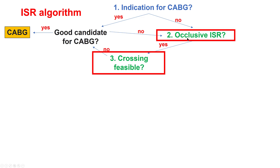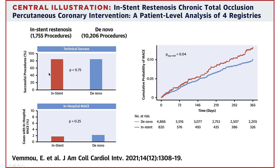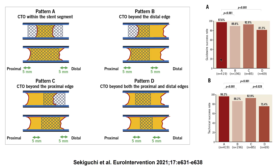The second consideration is whether the patient has occlusive — meaning total occlusion — in-stent restenosis, and if so, whether crossing of the CTO is feasible. We know that patients with de novo and in-stent CTOs have similar success rates in the current era. However, during follow-up, patients who have in-stent CTO have higher risk of MACE and higher risk for repeat restenosis and need for revascularization. We also know that if the occlusion extends beyond both edges of the stent, the success rates are lower than if the occlusion is more narrow, limited within the stent or within one edge of the stent.